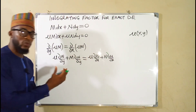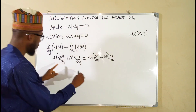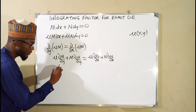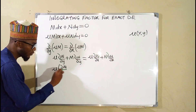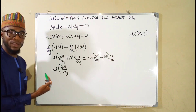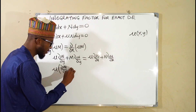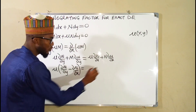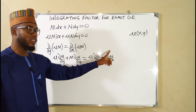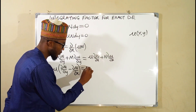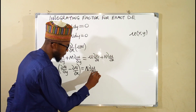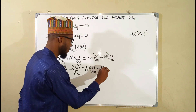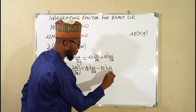Now we collect terms involving mu and those involving derivatives of mu together. We bring the mu terms together and factorize: partial derivative of M with respect to y minus partial derivative of N with respect to x. This equals N times the partial derivative of mu with respect to x, minus N times the partial derivative of mu with respect to y.